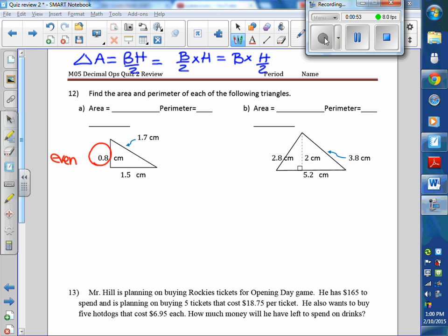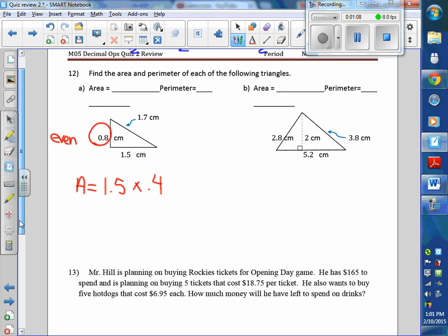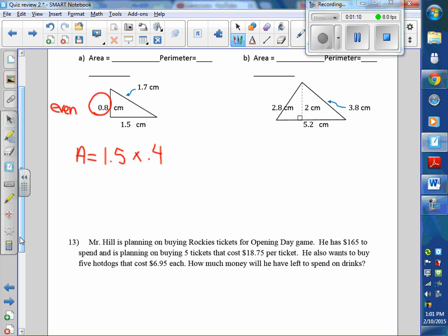So his area formula is going to be the base, 1.5 times half of the height, which is 0.4. It's just quicker. It's an option, it's not a requirement. But if we did that, we're going to put the 0.4 down here. And 5 times 4 is 20, 4 times 1 is 4, plus 2 is 6.